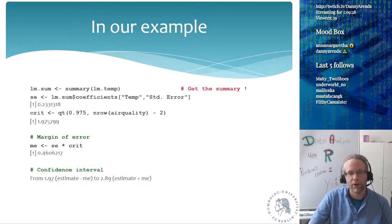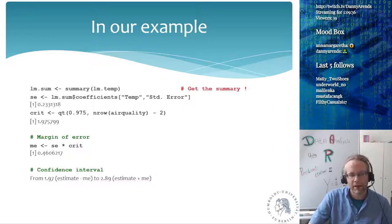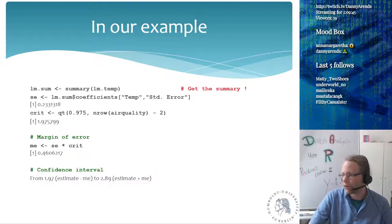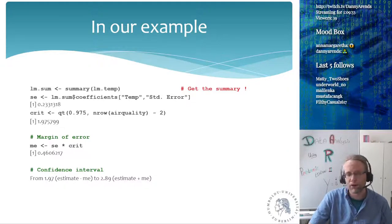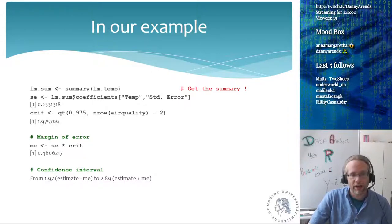For our example, I take the summary of LM temperature and store it in a variable called LM.sum. Then I take from the LM summary the coefficients for temperature, and instead of taking the beta estimate, I take the standard error. The coefficients are a matrix where the rows are the different parameters we estimate — the intercept and the temperature. Our standard error, saved in a variable, is 0.233.